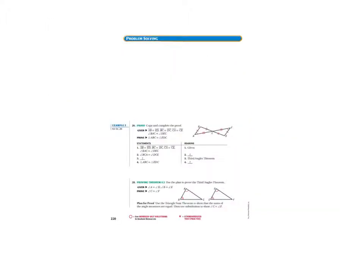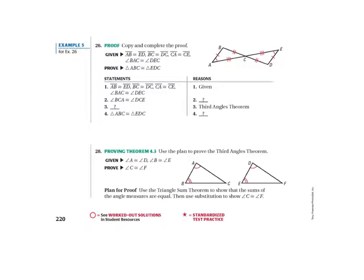The next question is number 26 — it wants you to complete the proof. They've already given us a partially filled-in proof with all of the given stated. For statement two, it's talking about angle B-C-A being congruent to angle D-C-E. Notice that these are vertical angles, so the reason here is the vertical angles theorem.